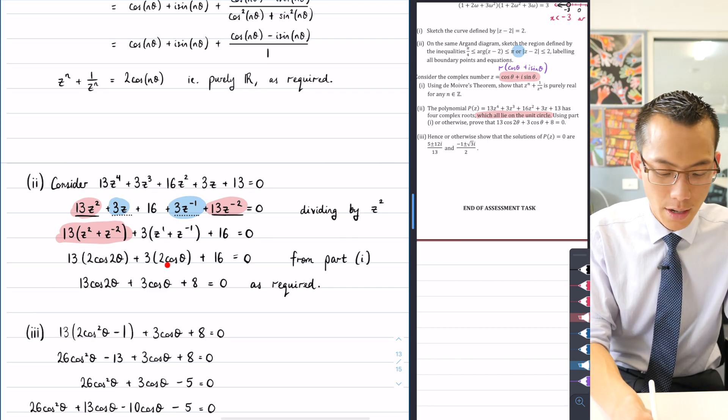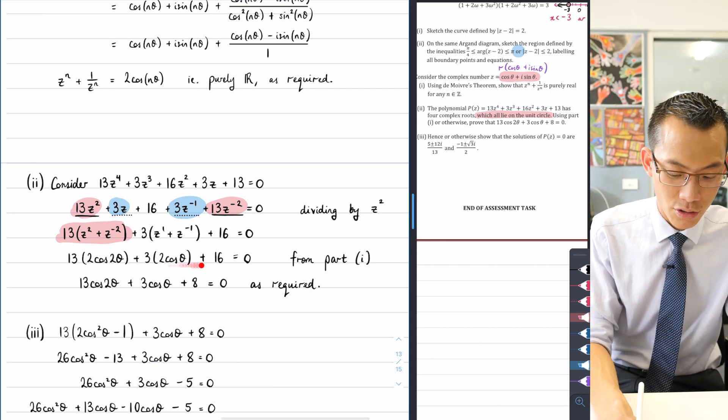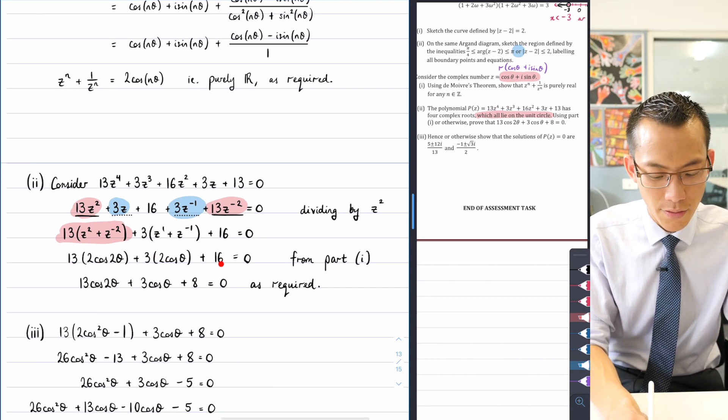And then essentially from this line here I go into the next line by using part one. There's that two cos n theta except here n's two and here n is one. Once you've expanded this all out you get this result. Not expanded out I should say, you should divide by two because all these are even. Two, two, sixteen divided by two gives you eight.